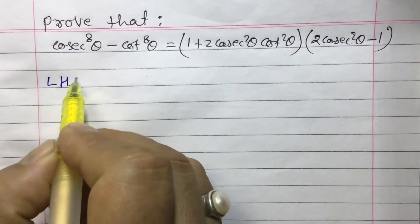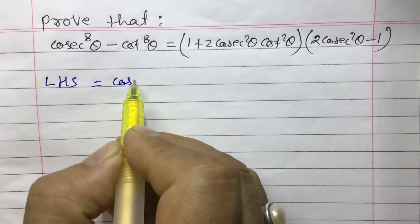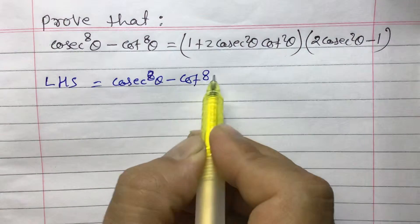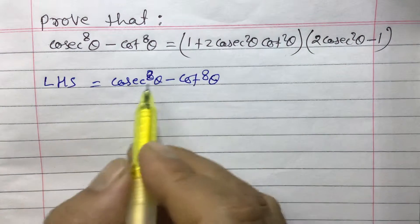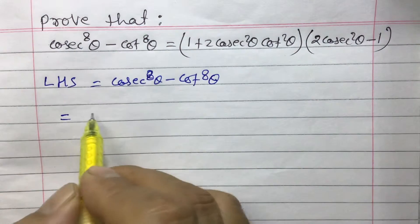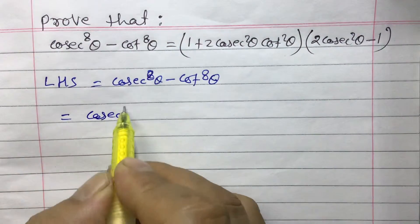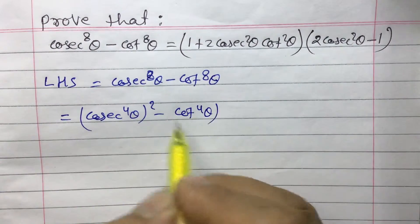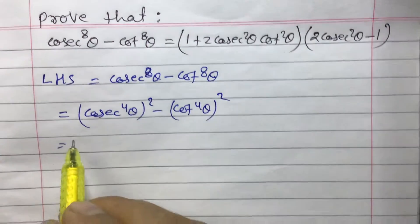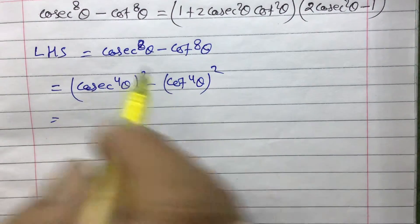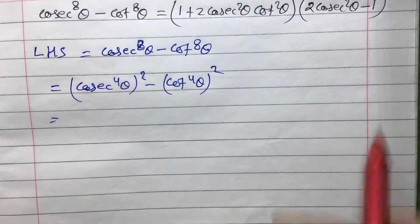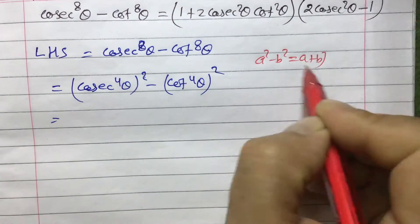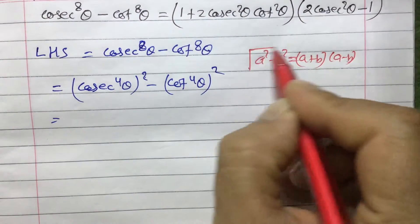So our equation is cosec⁸θ - cot⁸θ. We can write this in the form of a whole square: (cosec⁴θ)² - (cot⁴θ)². This can be written using the a² - b² formula. The formula is: a² - b² = (a + b)(a - b), and we can apply this here.